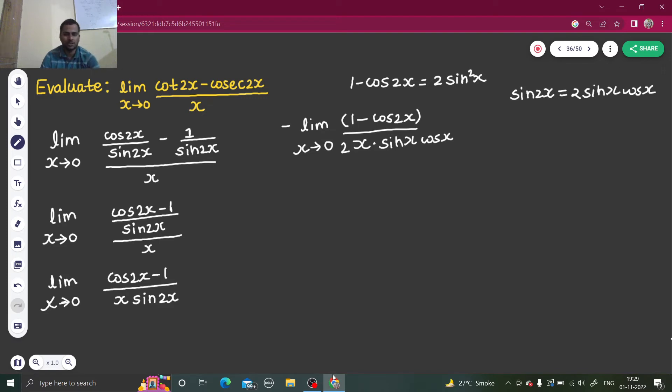Now 1 minus cos 2x I can replace by 2 sine squared x. So limit x tending to 0: 2 sine squared x. And that 2 sine squared x can also be written as 2 times sine x into sine x.